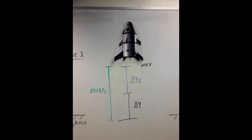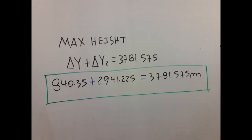So now, I am going to add the values for both stages, delta y1 and delta y2. And that's going to be the max height, which is the value they are asking for.